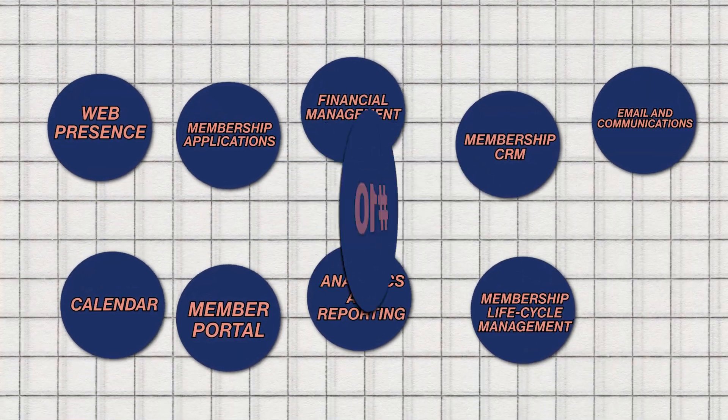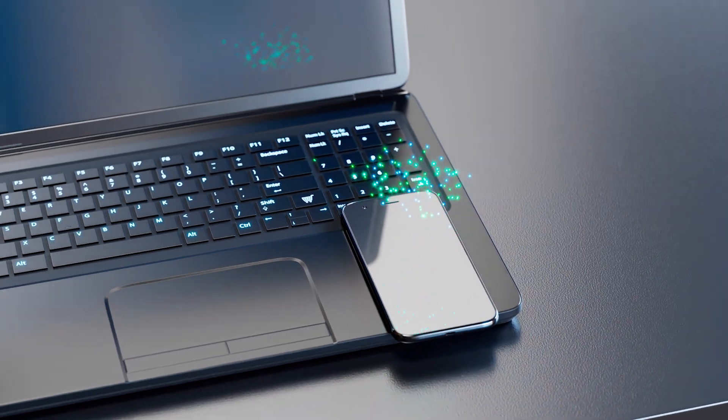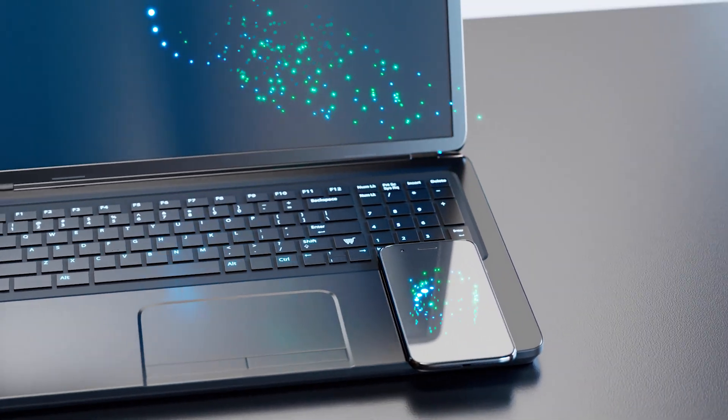Last but not least are integrations. As you're evaluating your membership software, make sure it integrates nicely with other tools — look for an API, a developer portal, or a partner directory. Many membership platforms claim to be all-in-one and say they'll never need to integrate with another platform, but we know that's really not the case. Eventually you'll want to use that membership data in another platform and sync that data. Making sure your data is portable through integrations is a critical aspect when evaluating membership software.